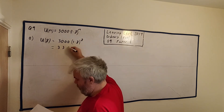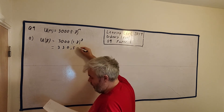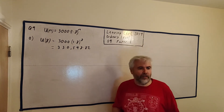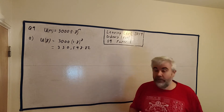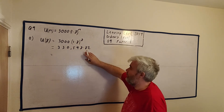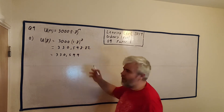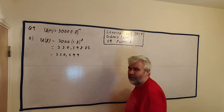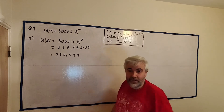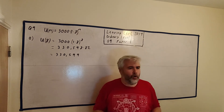We get 330,598.82. They didn't ask to round it off, but they said find the number of users — this decimal does not exist as a person, so they will dock a mark if you don't round. This is closest to 330,599, though 330,598 is also okay since we can't round up to create a person. Because it's only an estimate to begin with, I think 330,599 would be more appropriate.